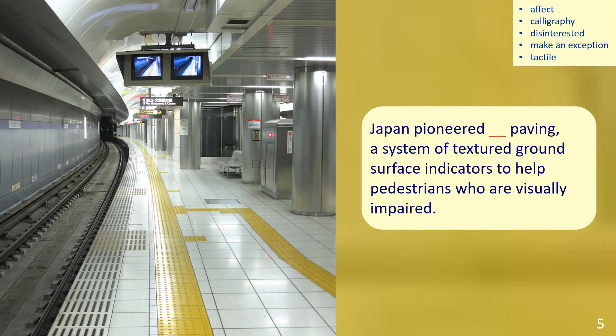In the picture we see the platform of a subway station in Japan. The sentence reads: Japan pioneered blank paving, a system of textured ground surface indicators to help pedestrians who are visually impaired. The answer is: Tactile.